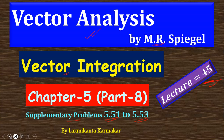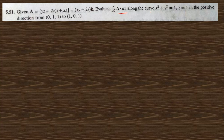Go to the question directly. 5.51 says: given A vector equal to this, evaluate the integral A dot dr along this vector in the positive direction. For that, we check whether this vector is conservative or not, so we need to find out the curl of A. What is the value of curl of A?